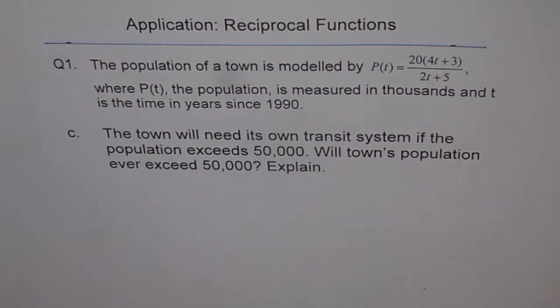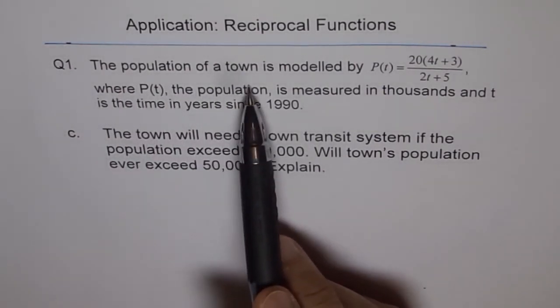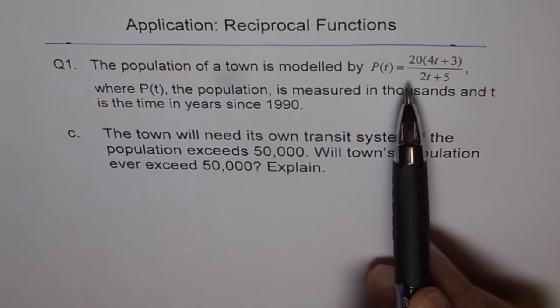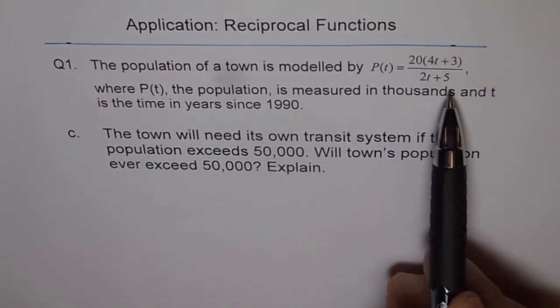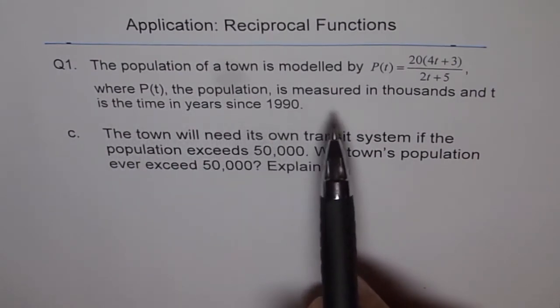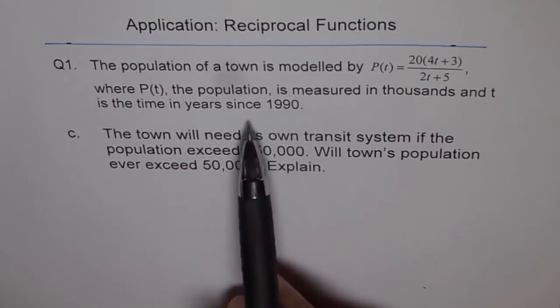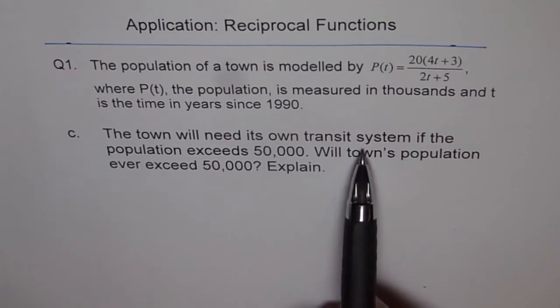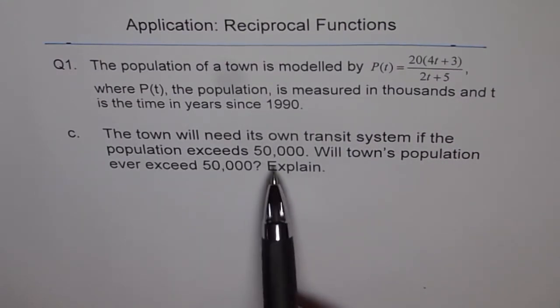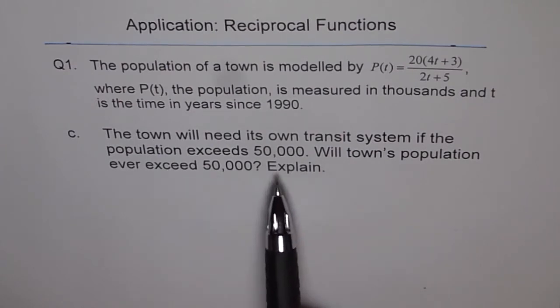Here is the solution for part C of our application problem. The question was, the population of a town is modeled by P(t) equals 20 times (4t plus 3) divided by (2t plus 5), where P(t), the population, is measured in thousands and t is the time in years since 1990. The town will need its own transit system if the population exceeds 50,000. Will the town's population ever exceed 50,000? Explain.